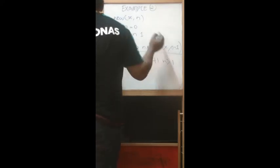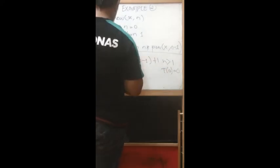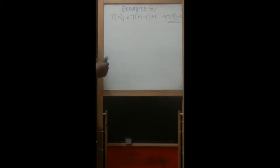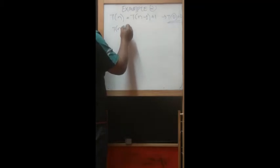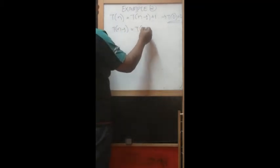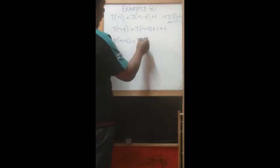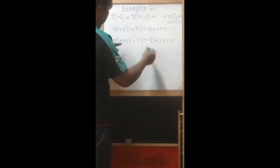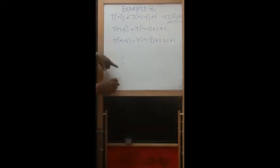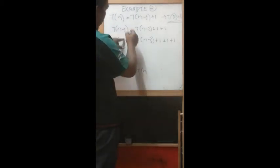The stopping condition is T(0) = 0. We do the same thing as the factorial just now. So this becomes n minus one, we reduce to n minus two, plus one plus one. After that, n minus two becomes n minus three, plus one plus one plus one. We can see the pattern forming here.